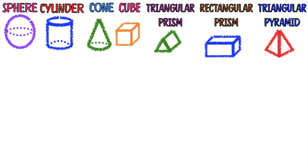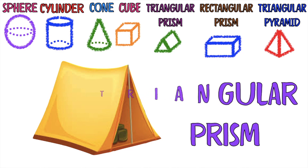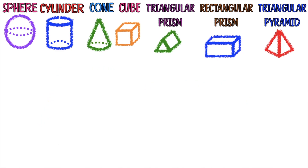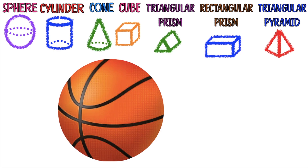How about this? A tent. Which of the space figures is being shown? It's a triangular prism. How about this? A ball. Very good, children — it's a sphere.